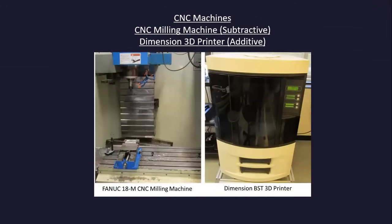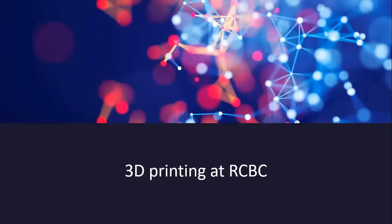Here you see two types of machines: the one on the left is a CNC milling machine, which is subtractive, and the one on the right is a Dimension 3D printer, which uses additive manufacturing technology.